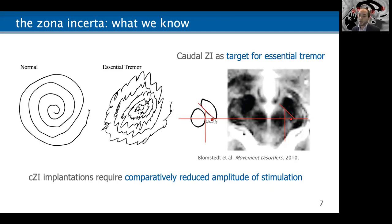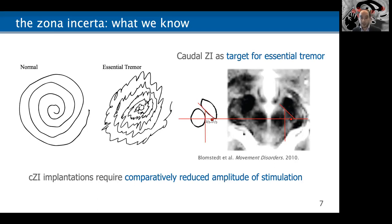Some groups prefer to call this the posterior subthalamic area (PSA), given it's behind the subthalamic nucleus, because there's some ambiguity as to what the true therapeutic target is. These CZI or PSA implantations, at least from single-center studies, seem to require comparatively reduced amplitude of stimulation compared to other targets like the motor thalamus. In our own experience in London, Ontario, they tend to require 1.5 to 2 mA, while the VIM or ventrolateral posterior stimulation requires higher, like 3–4 mA — which may benefit patients because they don't require as many IPG changes over time.